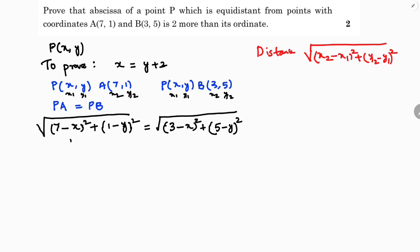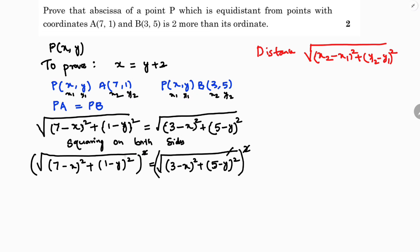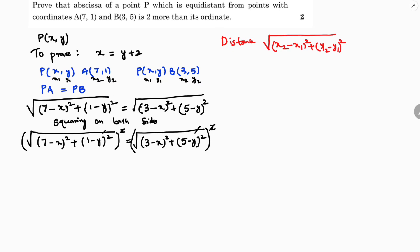Now since we have square roots on both sides, I will square both sides. Squaring on both sides: (7 minus x) whole square plus (1 minus y) whole square equals (3 minus x) whole square plus (5 minus y) whole square. The square root and square cancel out on both sides.